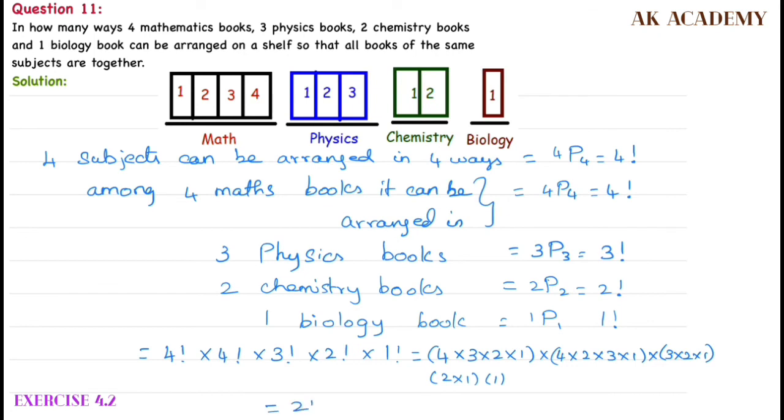If you multiply, which is equal to - 4, 3s are 12, 12, 2s are 24 into 2 into 2 into 6 into 2. If you multiply, you will get 6912.